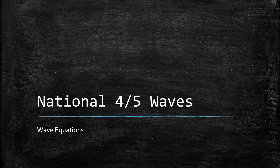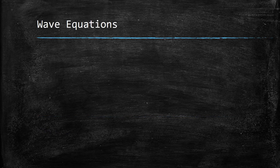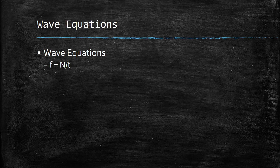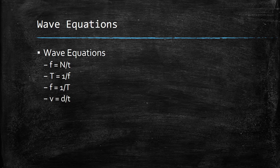National four or five waves. Wave equations. Here are some of the wave equations which we're going to be covering in this PowerPoint: F is equal to N over T, T is equal to 1 over F, F is equal to 1 over T, V is equal to D over T, D is equal to VT, and V is equal to F times lambda.